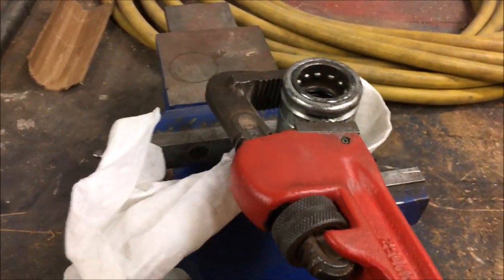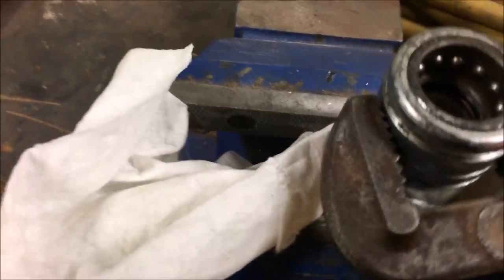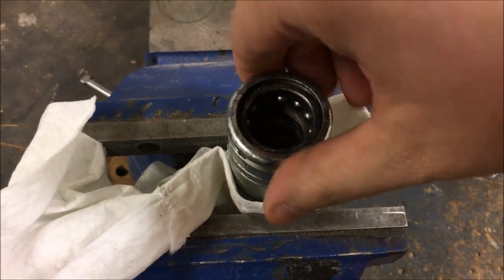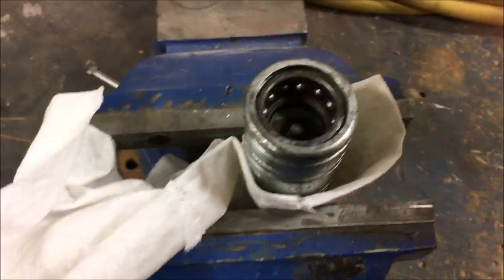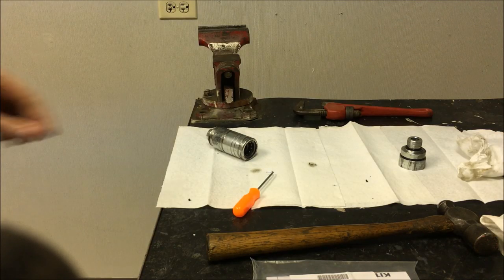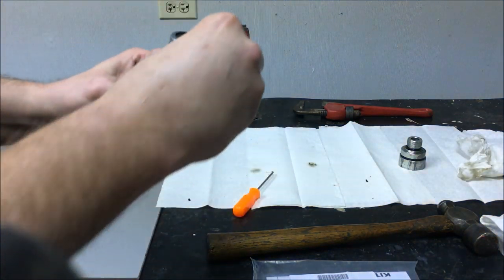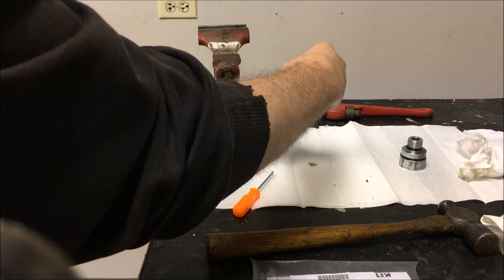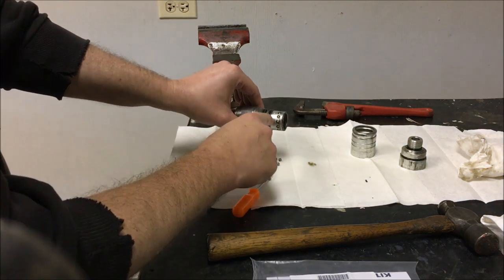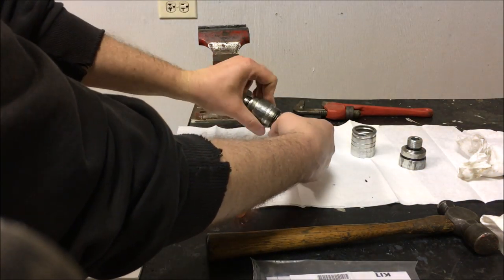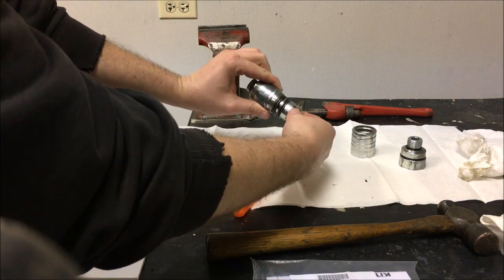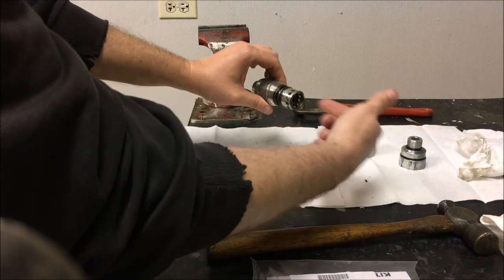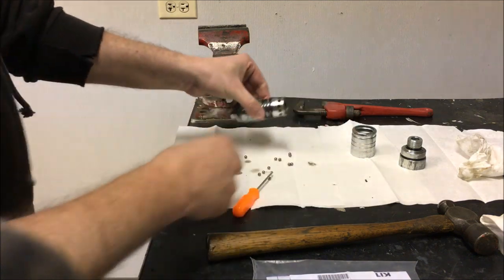Now we should be able to take it the rest of the way off. I'm not going to take this completely off yet and I'll show you why, but it's loose now. So I'm going to go ahead and take this off now. And that's the reason I wanted to wait until I get back here—all these little ball bearings fall out. That housing retains those, and they engage on your male end whenever you put the coupler in. They're all out now.